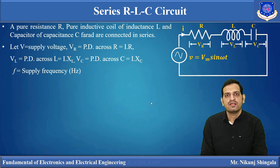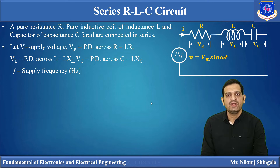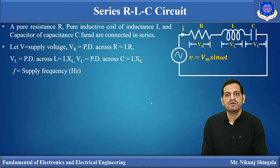Now as current will start to flow because of the voltage source, there will be a potential difference across every element. So let us define Vr as the potential difference across R, given by I·R; Vl is the potential difference across L, given by I·XL; and Vc is the potential difference across C, given by I·Xc. Here f is the supply frequency.